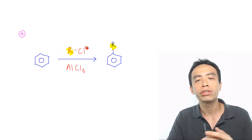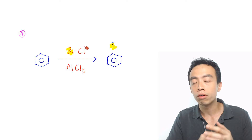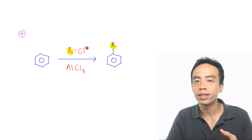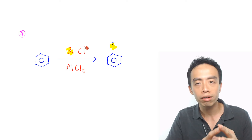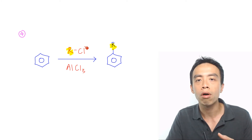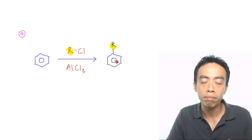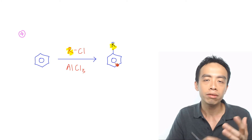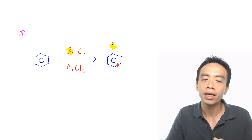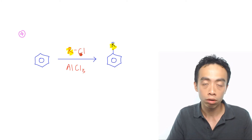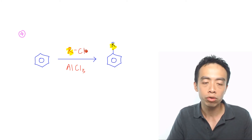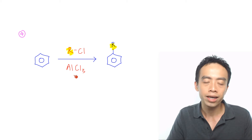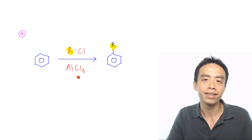Must-know reaction number 4 for benzene is the Friedel-Crafts alkylation of benzene to form alkyl benzene. This is done using an alkyl chloride — an R group bonded to a Cl group — with AlCl3 as catalyst.